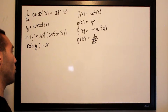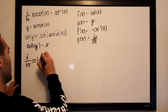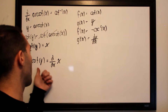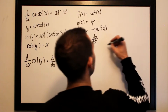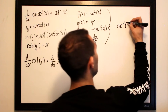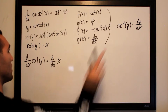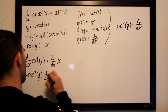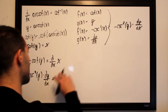We differentiate both sides: d/dx of cotangent of y equals d/dx of x. Using the chain rule — f′ composed with g, multiplied by g′ — the derivative of cotangent of y becomes negative cosecant squared of y, all multiplied by dy/dx. The derivative of the right side, d/dx of x, is simply 1. So we have negative cosecant squared of y times dy/dx equals 1.